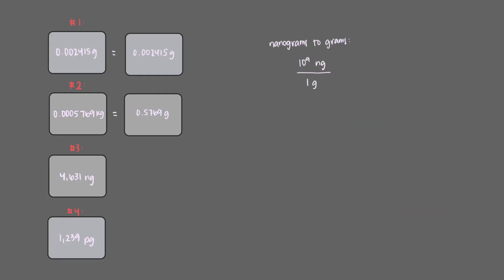We know that there are 10 to the 9 nanograms in 1 gram, so we'll start with 4631 nanograms and use that conversion. Again, we'll make sure that we cancel out our nanograms so that we're left with grams, since that was our goal. Once we multiply everything out, we see that this gold nugget has a mass of 0.00004631 grams.